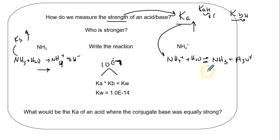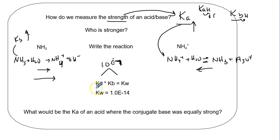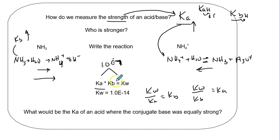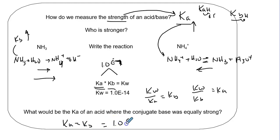One can't push one way stronger than the other pushes back. Either one pushes hard and the other pushes weak - they both can't be strong. So if you give one of these values, it would just be Kw divided by Ka equals Kb, and Kw divided by Kb equals Ka. If you have one, you can solve for the correlating one. What would be the Ka of an acid where the conjugate base is equally strong? That only happens when Ka equals Kb, which equals 1.0×10⁻⁷.